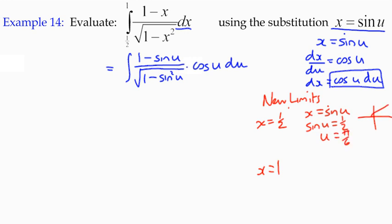We keep it in radian measure, not degrees. That was meant to be my quadrant diagram. And if x equals 1, then x equals sin u, so sin u equals 1. Therefore u equals 90 degrees or π over 2.